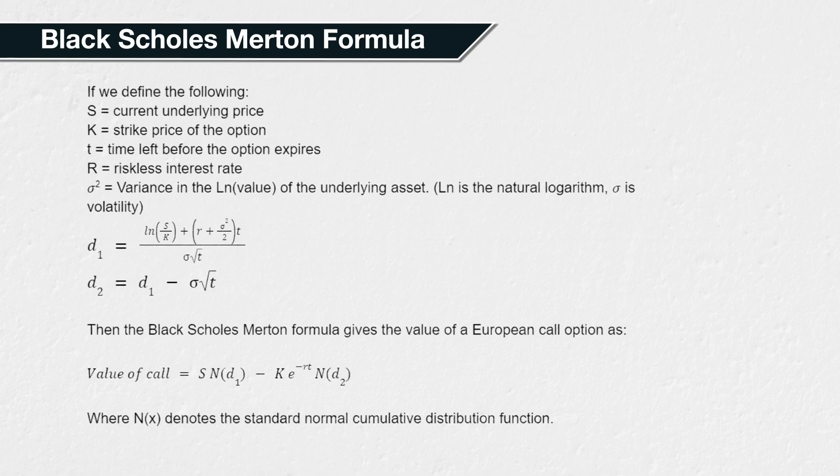We define d1 as follows, and d2 as follows. Then the Black-Scholes-Merton formula gives the value of a European call option as follows, where N(x) denotes the standard normal cumulative distribution function.